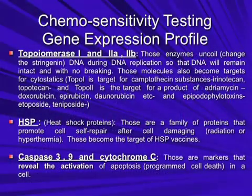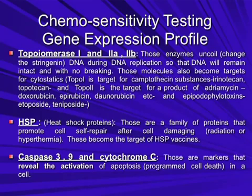The gene test also looks at some other specific genes that we take advantage of here at the IAT, like the heat shock protein and the telomerase enzyme, because there are treatments not yet available in the United States that use this information and heat shock protein vaccinations to treat the cancer. This test tells us whether or not those treatments should rationally be effective.